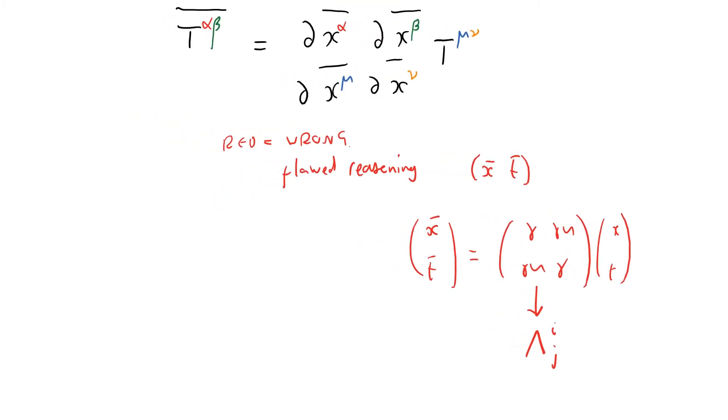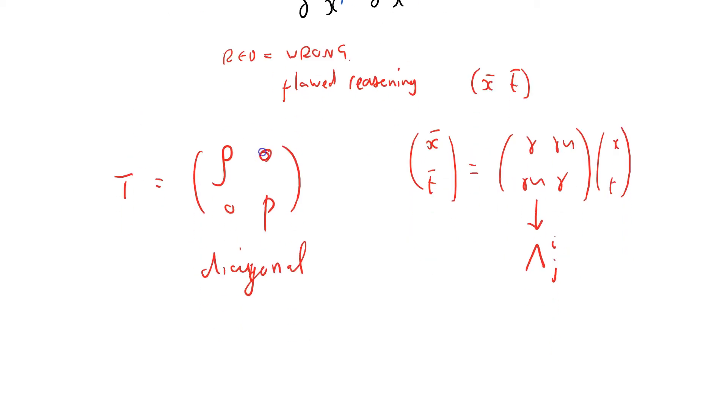I'm just going to consider a 2x2 case, and I'm also going to consider a frame in which t equals, I'm sorry, rho 0p, so it's diagonal. And in this rest frame, there's no off diagonal elements, and so it corresponds to a perfect fluid.